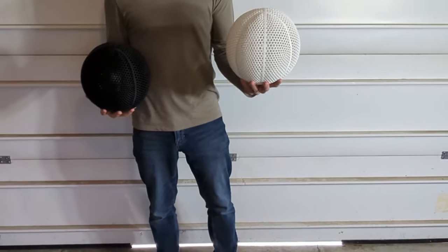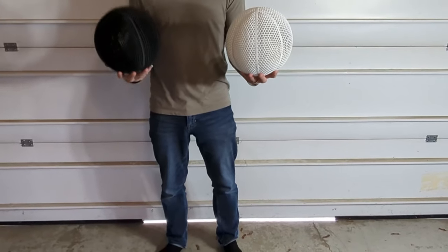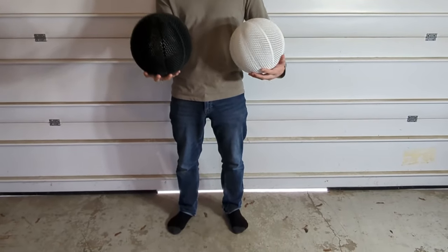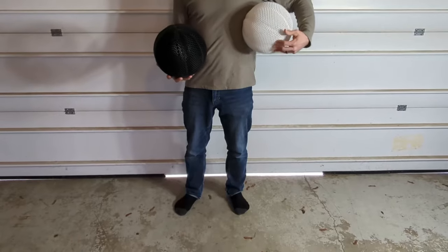In my left hand I'm holding the Flex PLA in white, and in my right hand I'm holding the Super PLA Plus in black. We're going to do a bounce test now.